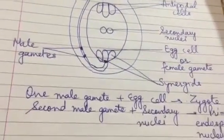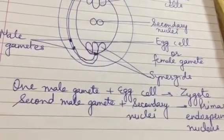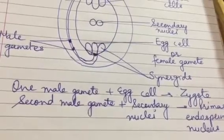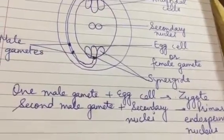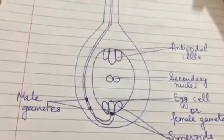This entire process is known as double fertilization in which one male gamete combines with the egg cell to form the zygote. Second male gamete combines with the secondary nuclei to form the primary endosperm nucleus.